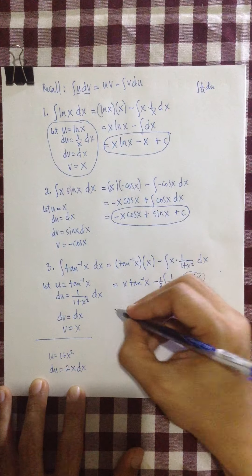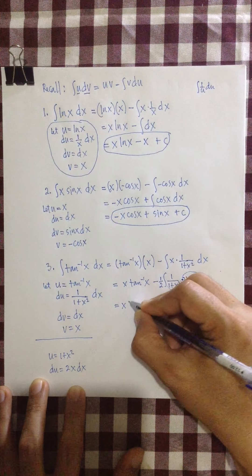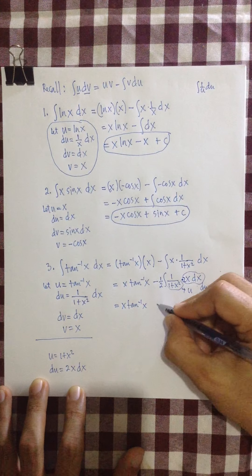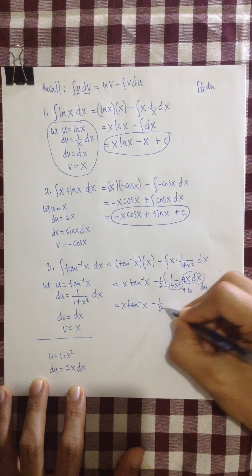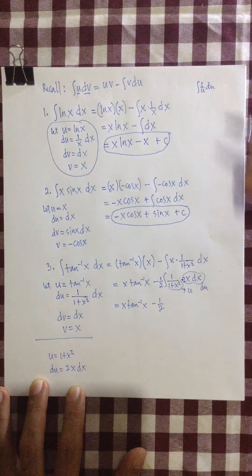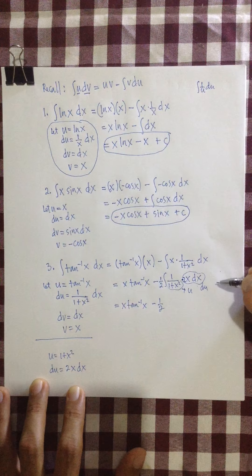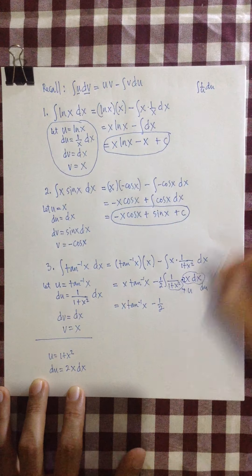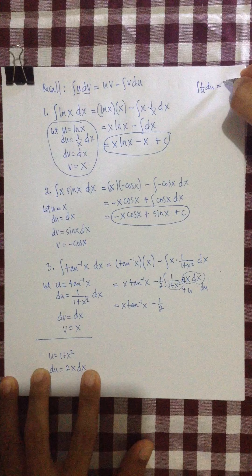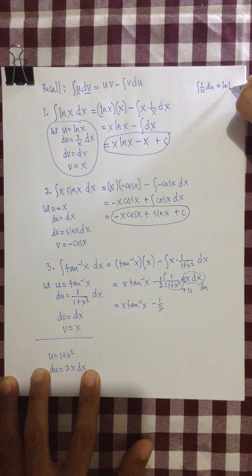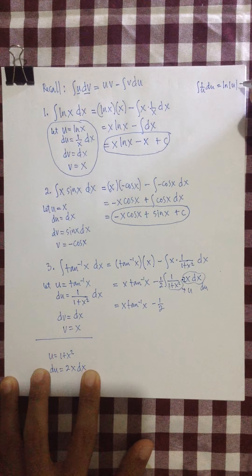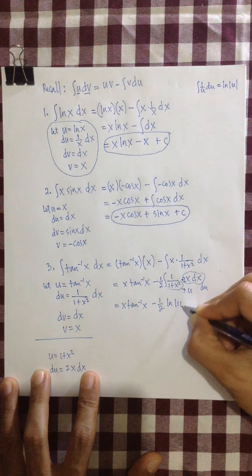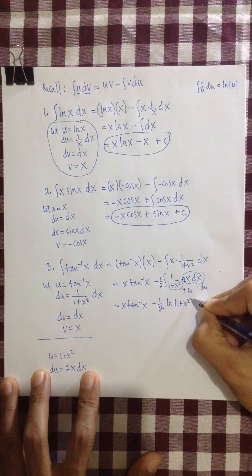So this is now of the form integral of 1 over u du, right? So that continuing with our computation, we have x tangent inverse x minus 1 half of integral of 1 over u, 1 over u du is what? From this formula, remember, this is equal to ln of the absolute value of u. So therefore, this is ln of the absolute value of 1 plus x squared.